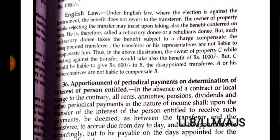Under English law, where the election is against the instrument, the benefit does not revert to the transferor. The owner of the property, while rejecting the transfer, insists on taking also the benefit conferred on him — he is therefore called a 'refractory donee' or a 'rebellious donee.' But this refractory donee takes the benefit subject to a charge to compensate the disappointed transferee. The transferor and his representatives are not liable to compensate the transferee. So in the above illustration, C while electing against the transfer would take also the benefit of Rs. 1000 but would be liable to give Rs. 700 to B, the disappointed transferee, while A or his representatives are not liable to compensate B.